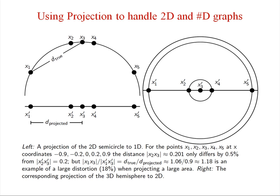To reduce dimensionality, we will use the concept of projection. For example, using projection we can handle 2D and 1D graphs. Suppose five points x1, x2, x3, x4, and x5 are placed in a 2D circle — we project them onto a 1D line.